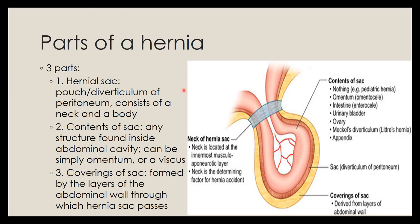What are the parts of a hernia? Any hernia has basically three parts. We have the hernial sac, which is the pouch or diverticulum of peritoneum, consisting of a neck and a body. Then we have the contents of the sac, which can be any structure present inside the abdominal cavity.